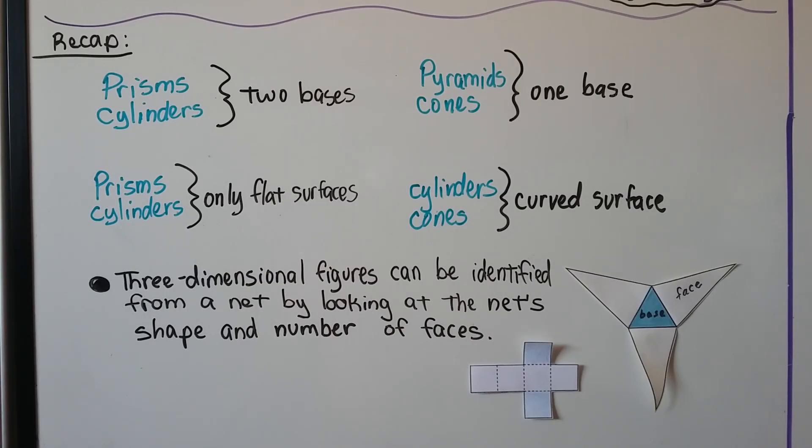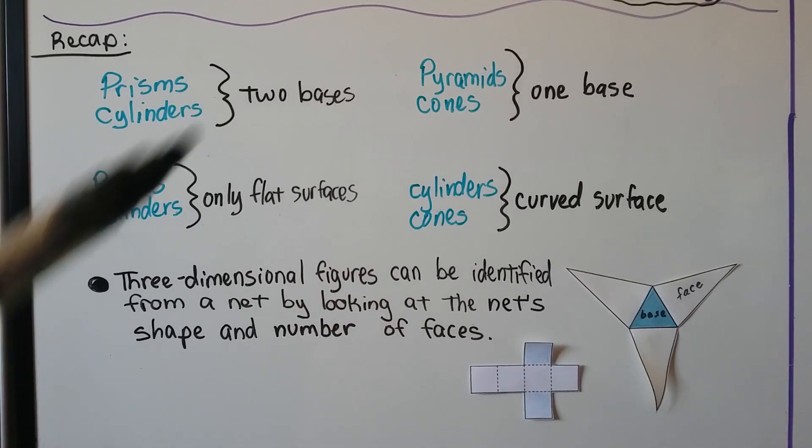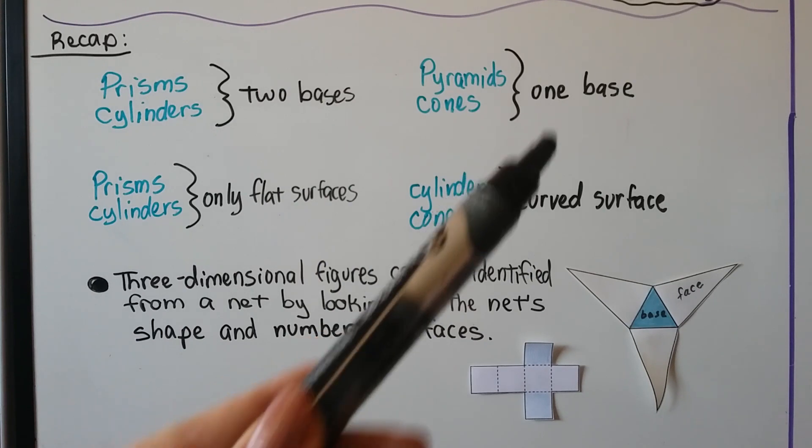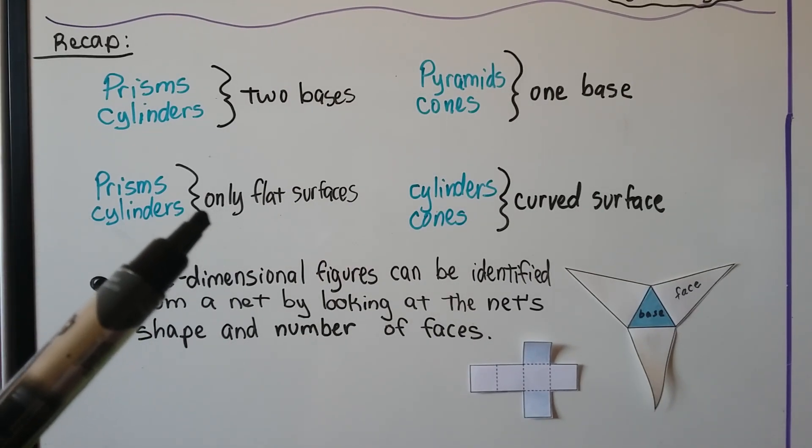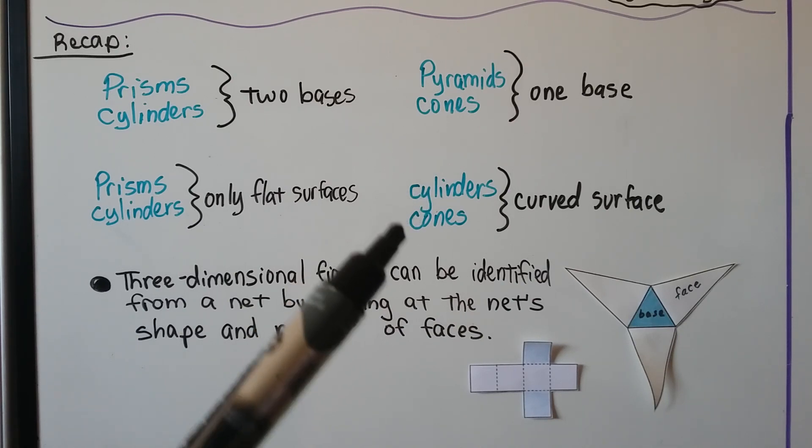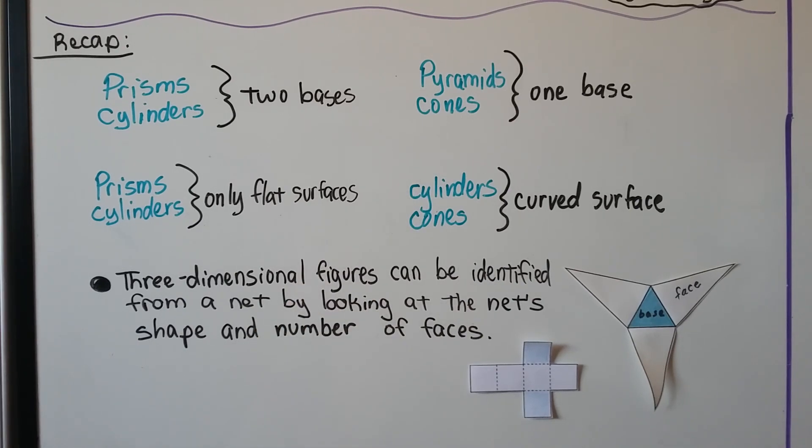So for a recap of 11.1, prisms and cylinders have two bases. Pyramids and cones have one base. Prisms and cylinders have only flat surfaces. Cylinders and cones have curved surfaces. And three-dimensional figures can be identified from a net. It's the unfolded 3D figure. By looking at the net's shape and the number of faces it has. So that would be a triangular prism, wouldn't it? And that would be a cube.